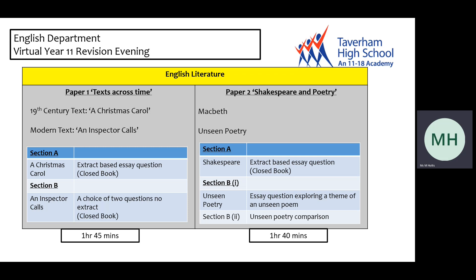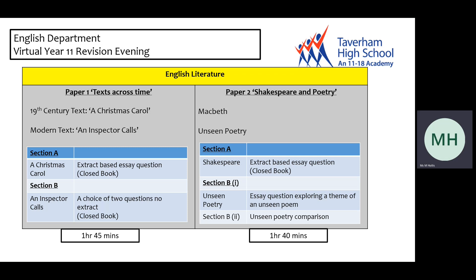Both are closed text, meaning students will not have a copy of the text in the exam. However, A Christmas Carol will be based on an extract. For An Inspector Calls, students have a choice of two questions and it is entirely closed book. Paper two, Shakespeare and Poetry, is the mandatory paper consisting of Macbeth and Unseen Poetry. Again, Macbeth is closed book — the only material students will have is the extract for the question. This is followed by section B, the Unseen Poetry component. Part one requires students to analyse a poem, examining language and themes linked to the question. Part B requires students to compare the previous unseen poem to a new poem; however, this is only an eight-mark question.